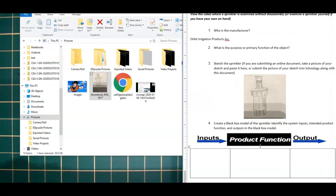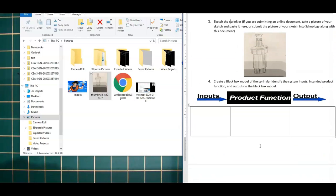But from there, we can move on to the next question. Create a black box model of the sprinkler to identify the system inputs, the intended product functions, and the outputs of the black box model. Now you may recall, we've learned how to do this in the past. All you do is you fill in this box. You say, what goes into this sprinkler system? So what kind of things go into this system to make it work? And so you have to think about what is the function?